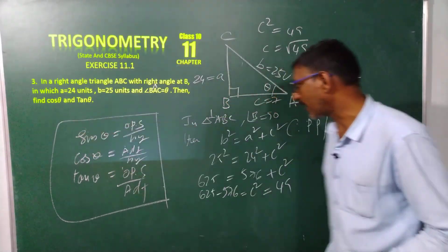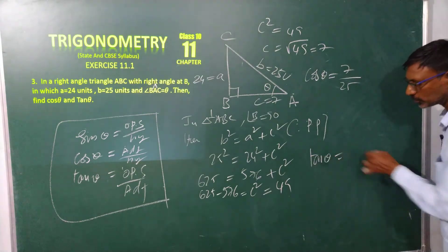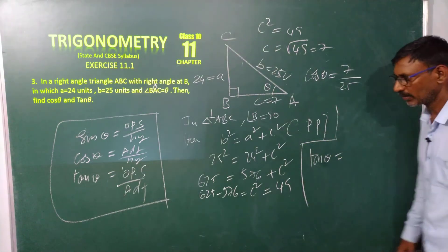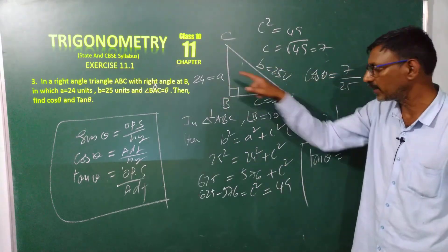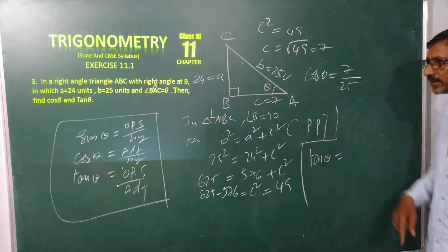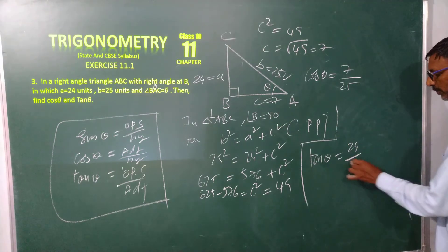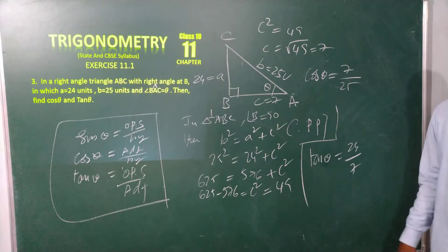Very next one, tan theta. Tan theta is equal to opposite side by adjacent side. This is my opposite side and this is my adjacent side. Opposite side is 24, adjacent side is 7.